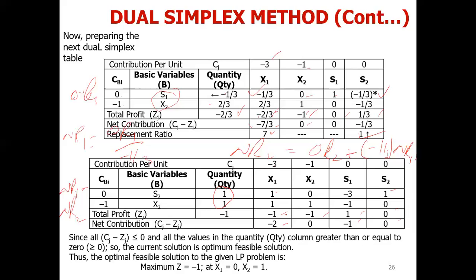Looking at feasibility and optimality: CJ minus ZJ is less than or equal to zero for all columns, and the right-hand side quantities (BI) are all greater than or equal to zero. So the solution is both feasible and optimum. The objective function value Z equals minus 1, X1 is not in the basis so X1 equals 0, and X2 equals 1. This is our optimum solution.